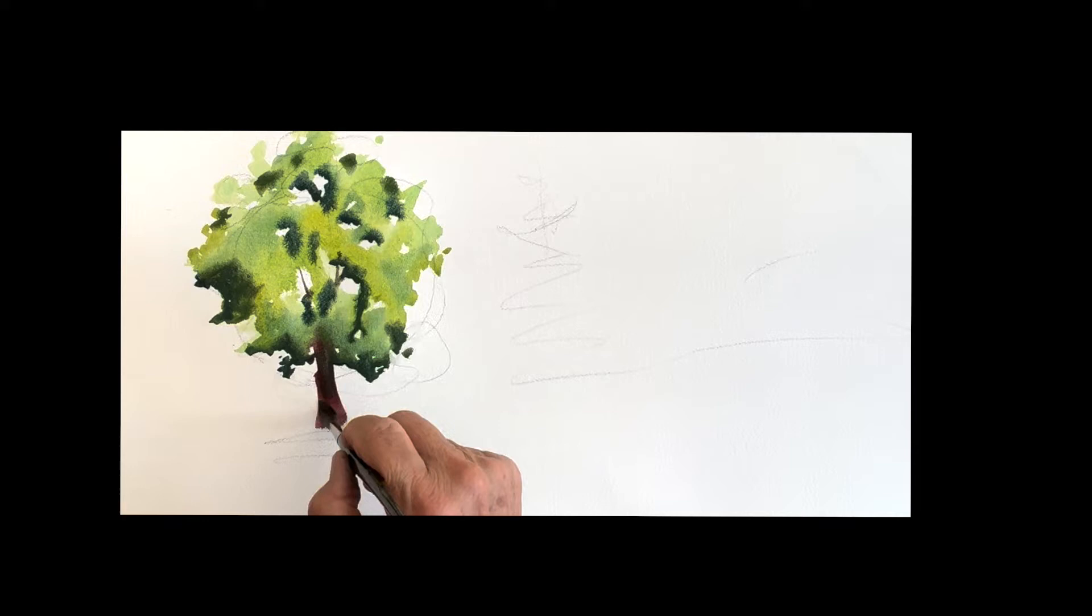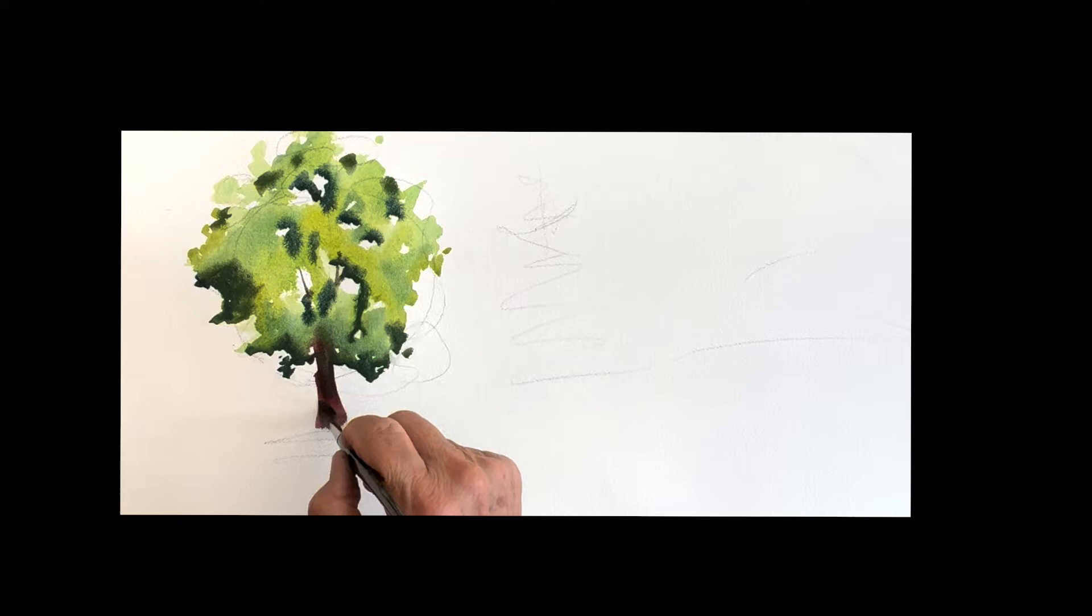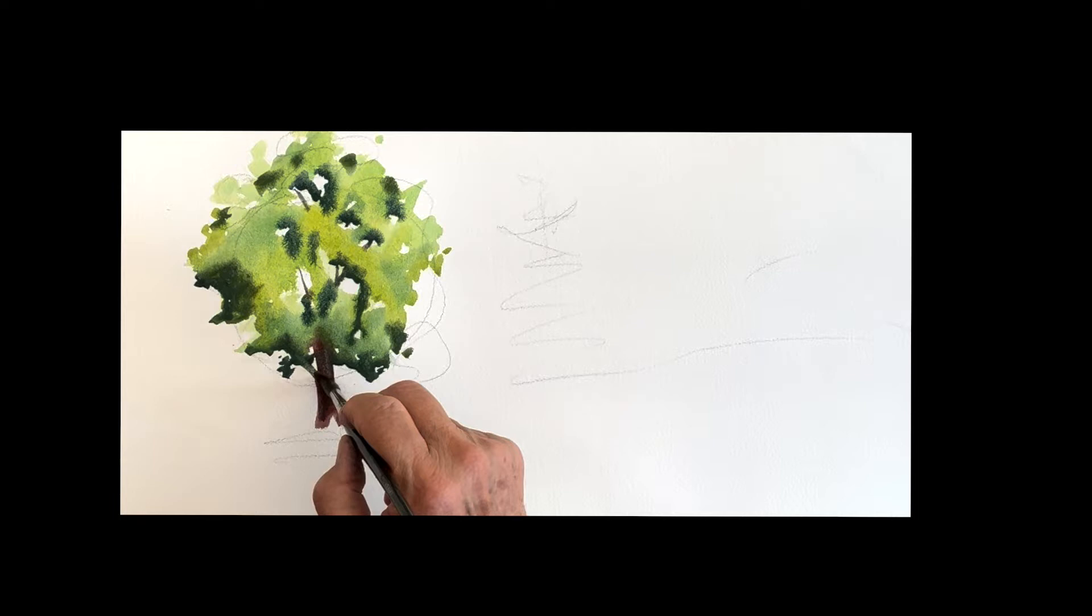And then you can keep running a branch. If you have sky holes, run a branch through them, and that helps to also give you some depth. Some branches on the bottom of the trees.